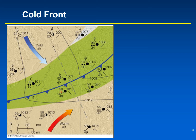Behind the cold front, the winds are coming from the northwest — to the north of the cold front, winds are from the northwest with some high wind speeds including up to 30 miles per hour. Ahead of the cold front, south of it, the winds are coming from the southwest. So you see a shift in wind direction — one of the indicators of the front.